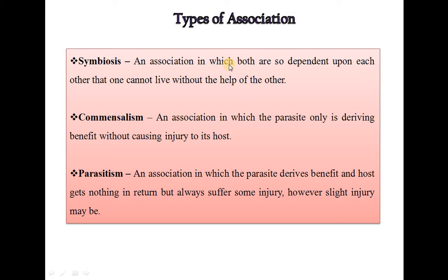There are different types of association. Symbiosis is an association in which both organisms are dependent upon each other such that one cannot live without the other — this is called a symbiotic association. They cannot live without each other.